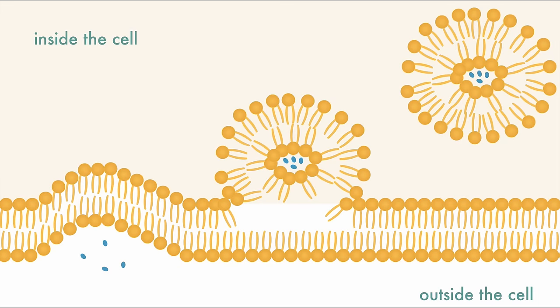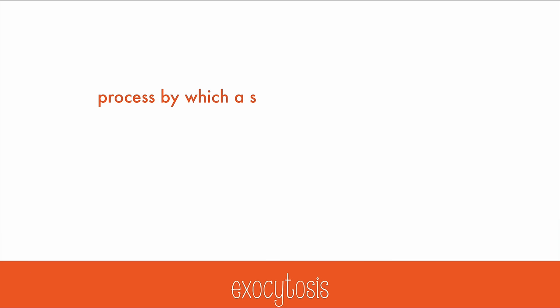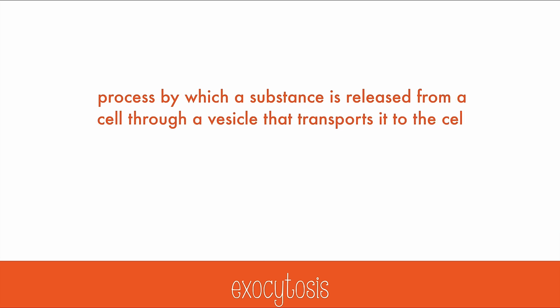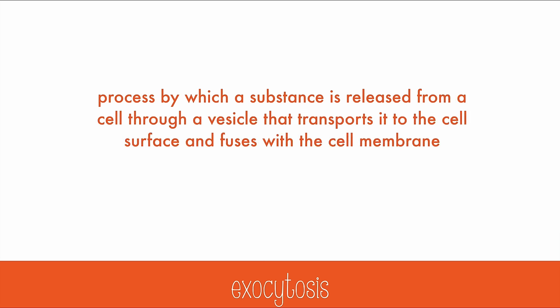Here you can see the way it works. First, the cell membrane begins to pinch around the substances, and eventually it forms a vesicle, which can carry the substance to any part of the cell. Exocytosis is basically the opposite of endocytosis. It's a process by which a substance is released from a cell through a vesicle that transports it to the cell surface and fuses with the cell membrane.